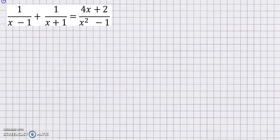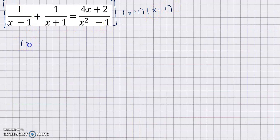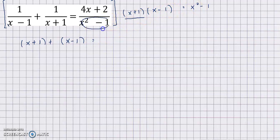When we multiply through, for the term with denominator (x minus 1), what remains is (x plus 1) times 1, giving x plus 1. For the term with denominator (x plus 1), what remains is (x minus 1) times 1, giving x minus 1. Since (x plus 1)(x minus 1) equals x squared minus 1, dividing by x squared minus 1 leaves 1, so the right side becomes 4x plus 2.